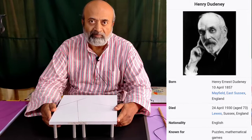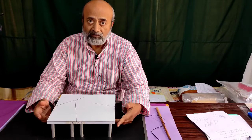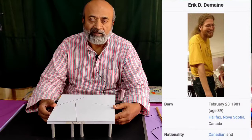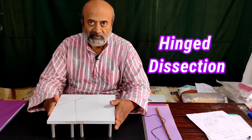In 1902, another mathematician called Henry Dudeny from Britain succeeded in making this square into another polygon — that is, an equilateral triangle. Then in 2007, another great mathematician called Erik Demaine proved mathematically how one polygon can be dissected into another polygon of equal area. This is also called a hinged dissection.